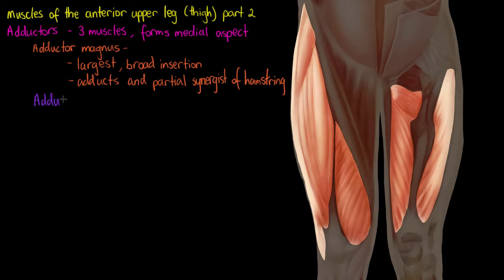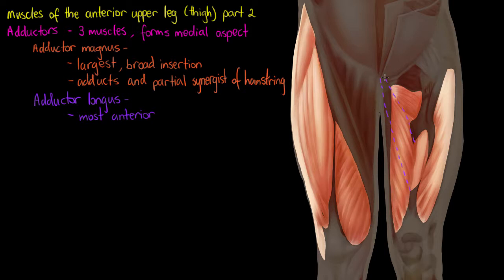Moving on to our second adductor muscle: the adductor longus. The adductor longus is going to be the most anterior, or most superficial, of the adductor muscles. A portion of this muscle has been cut away in this drawing to show all of the muscles beneath, so it's going to be laying over the top of a portion of our adductor magnus, making it the most superficial of the adductor muscles — but not the most superficial on the leg overall.